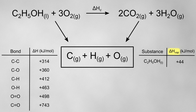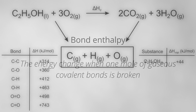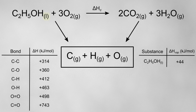The bond enthalpy is always quoted for gaseous molecules, but in our reaction ethanol is in the liquid state. This means that we first have to vaporize our ethanol before we can break the bonds, so both the enthalpy of vaporization and the bond enthalpies will be required for ethanol in our Hess cycle.